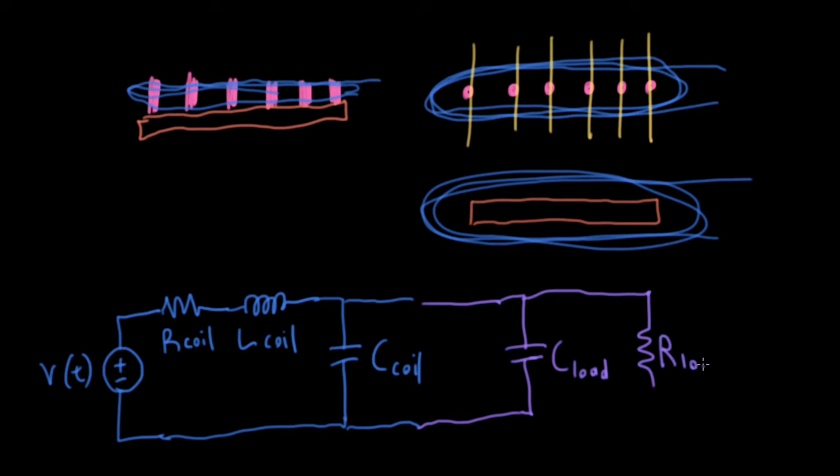So I'm going to call that C load. And let me put an R load here. And what this is usually representing is the input impedance of the amplifier or the first effects device in your chain. And again, notice that I've left out your volume control and your tone controls on your guitar.